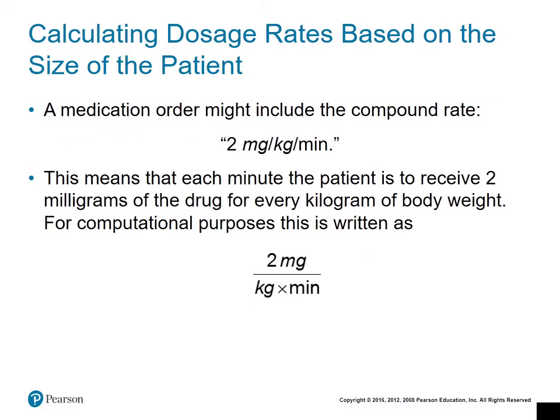Now we're going to calculate dosage rates based on the size of the patient. A lot of the rates we'll be working with are compound rates — in this case, two milligrams per kilogram per minute. So for every minute that passes, the patient receives two milligrams per every kilogram they weigh. When you put this compound rate in fraction form, it becomes two milligrams over kilograms times minutes — it's based on the patient's size times the time.